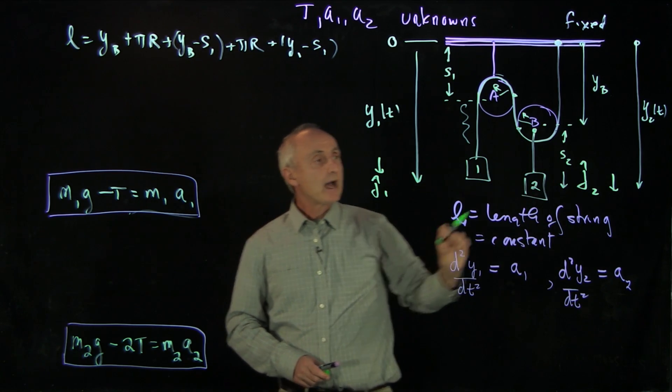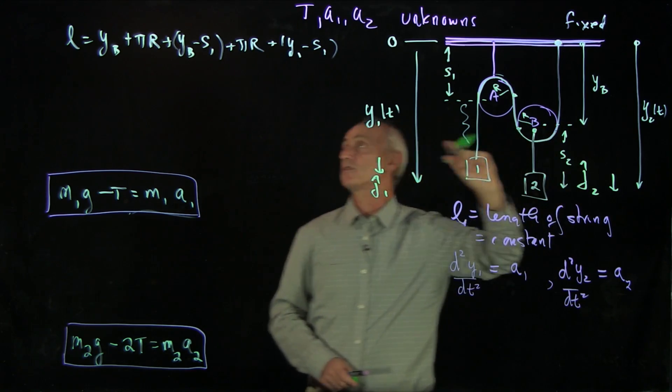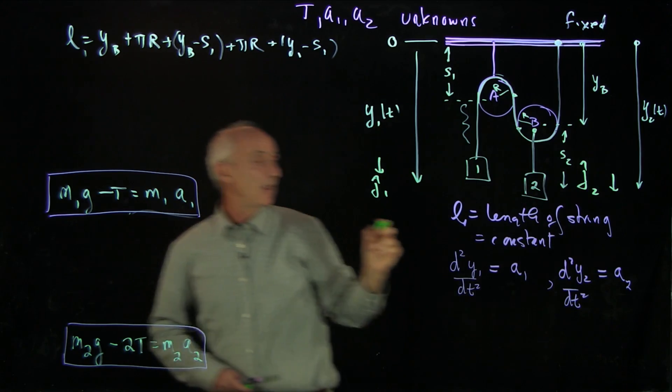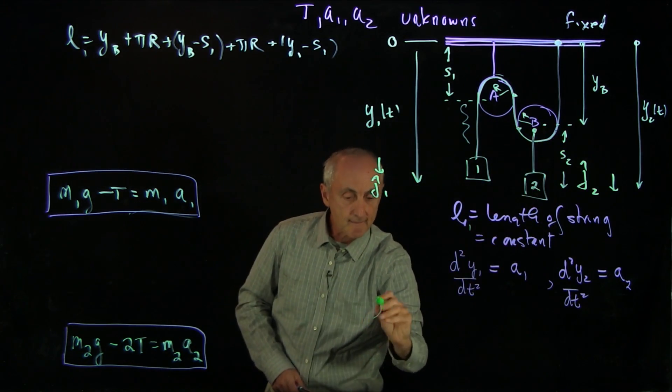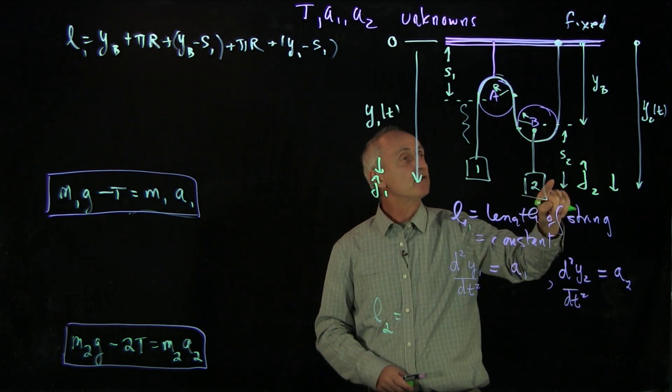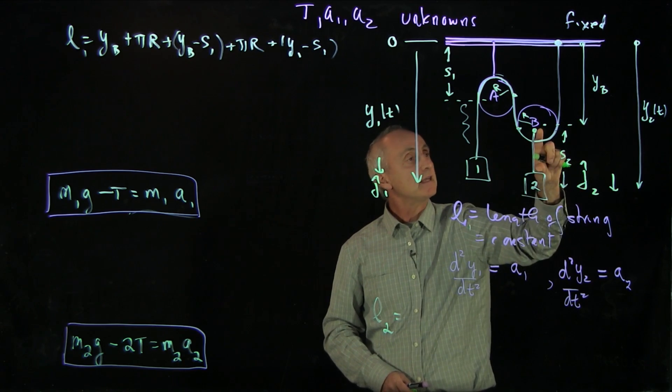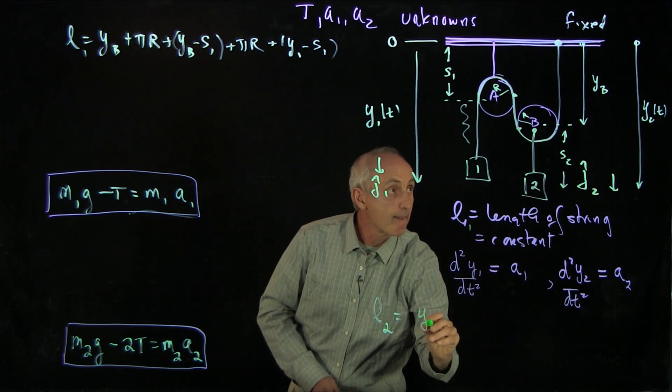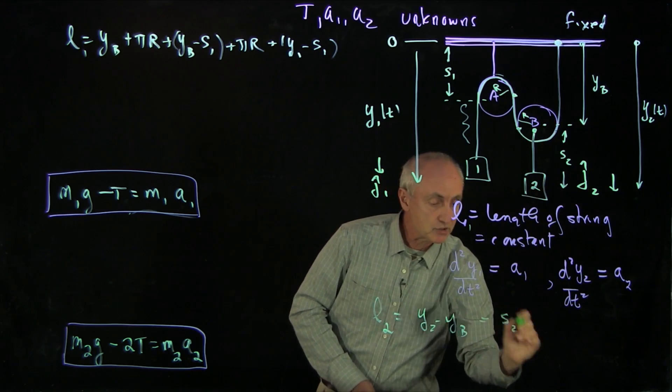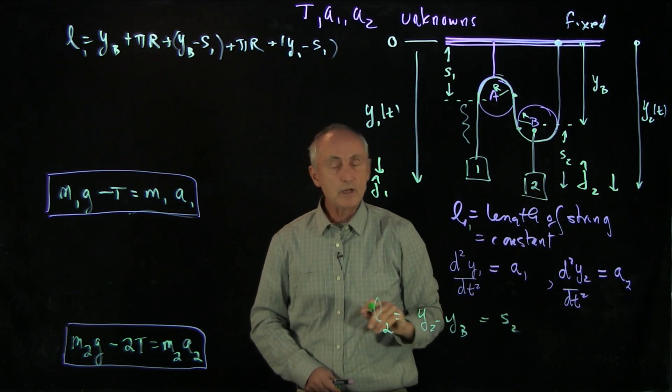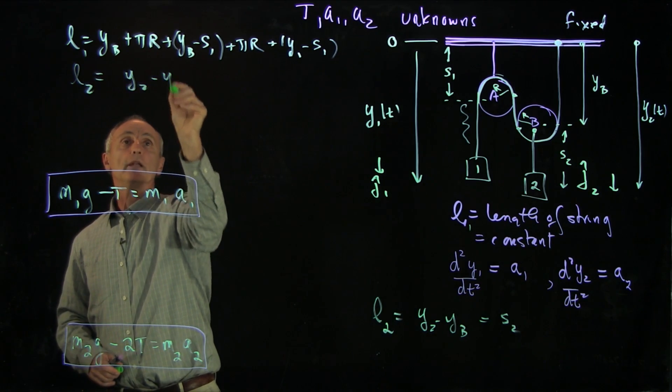We also have another constraint condition that this length of the string, we're going to call this l1. We have a second string here, l2. And l2 is given by y2. This length is y2 minus yb, and that was what we called this constant s2. So we now have two string lengths, l2 equals y2 minus yb. And both of these string lengths are constant.